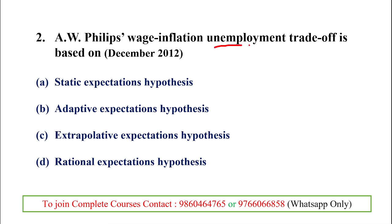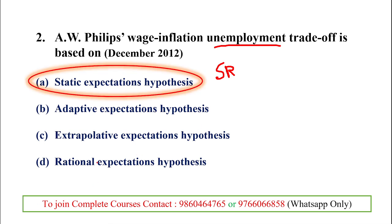The next question: what is the wage inflation and unemployment trade-off based on? Whenever we get a Phillips curve question without specification, it is almost always short-run. The short-run Phillips curve trade-off is based on the options: static expectation, adaptive expectation, extrapolative expectation, or rational expectation.